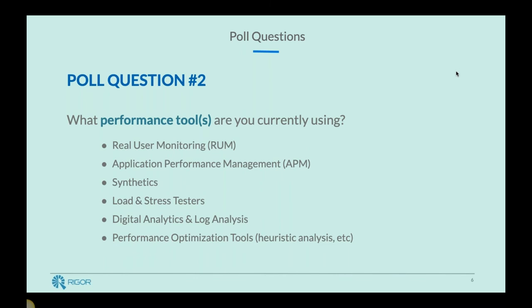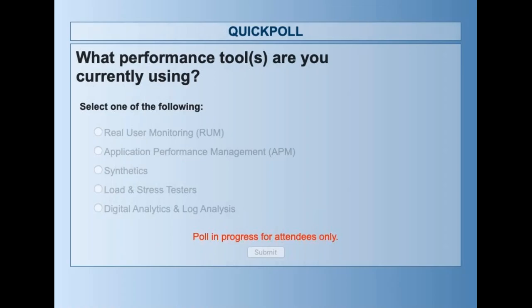That brings us to our next poll, which is: given those classes of performance tools, we're interested in understanding what tools people are using now. Rich, you and I have talked a lot about how there's a maturing process with these tools — you often start with some basic monitoring, then move to flows and more. What's the place where you see people start using tools, and how do they expand as their needs mature?